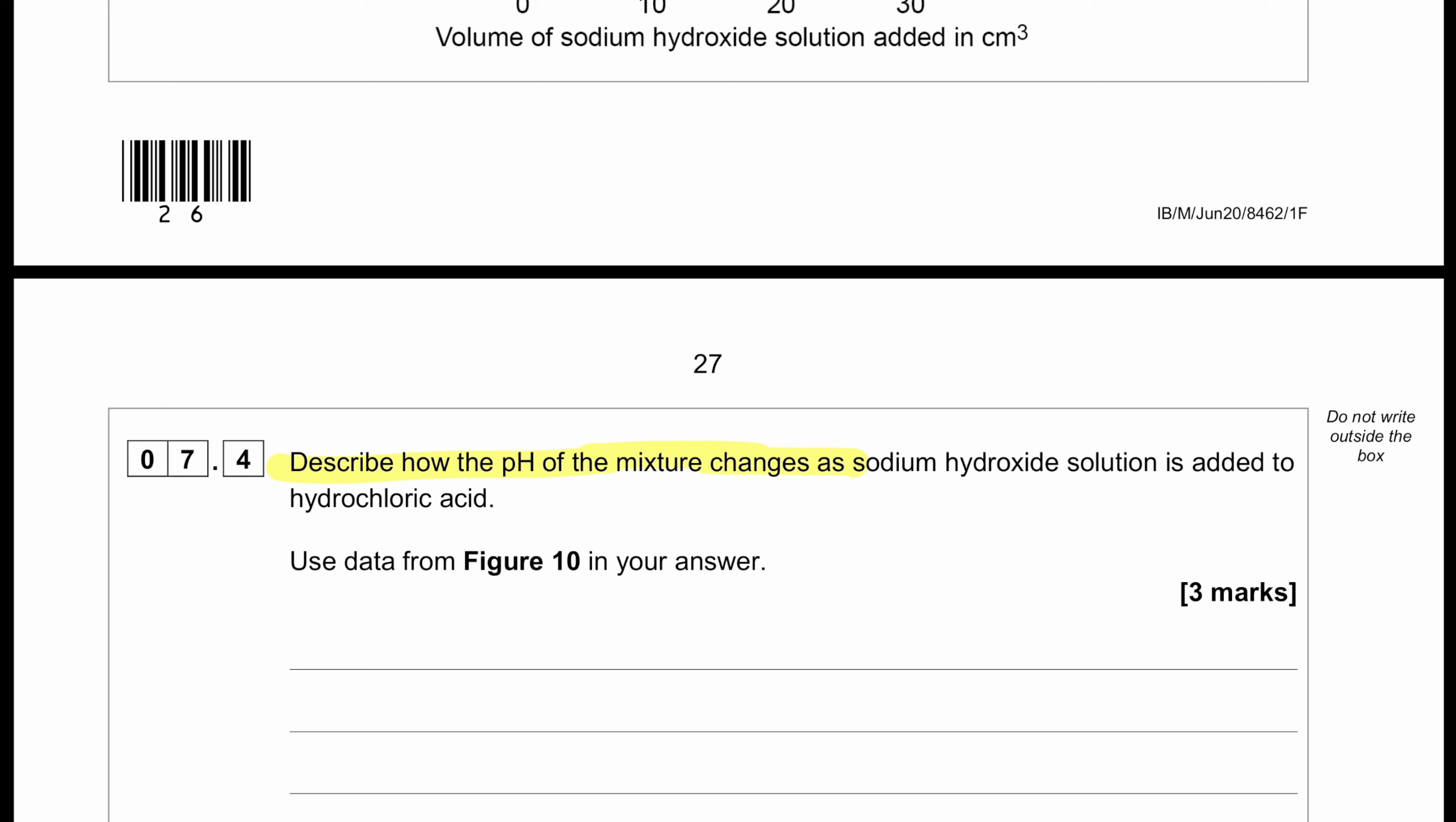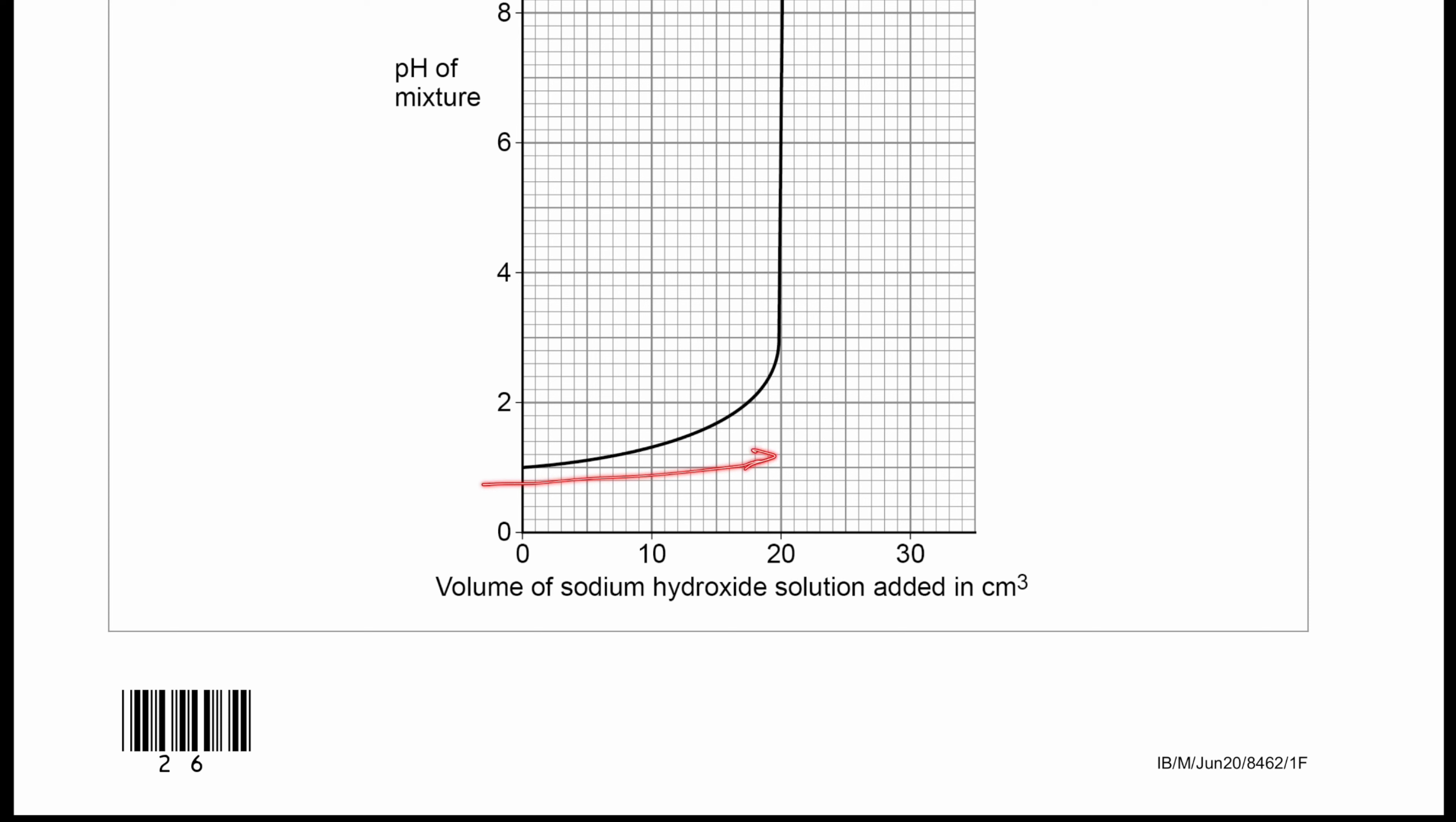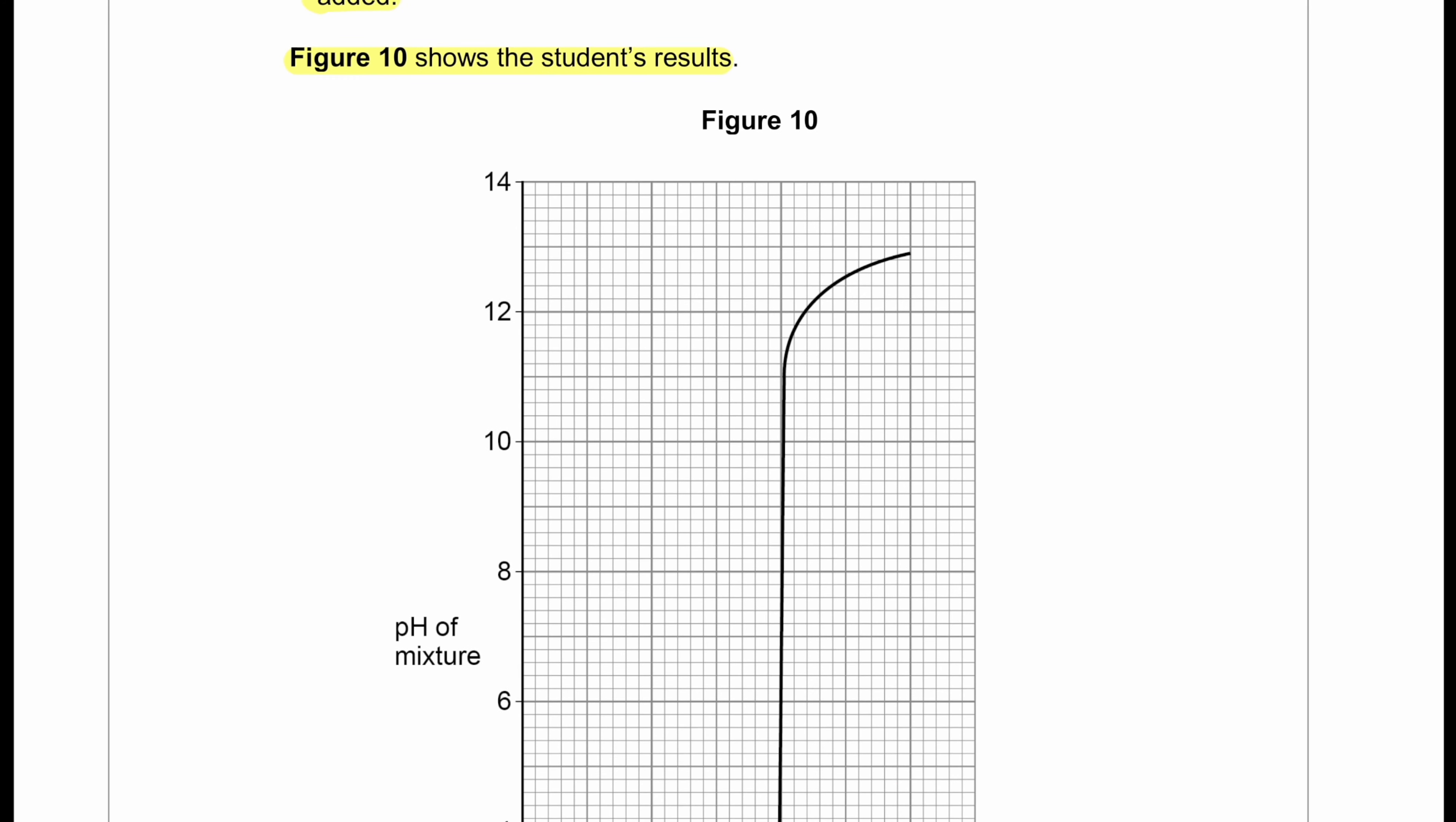Describe how the pH of the mixture changes as sodium hydroxide solution is added to hydrochloric acid. To answer a question like this, we'll have to consider in this way. When we are adding the base, the base is actually removing the hydrogen ion from the solution. So the description will be: from 0 to 20 cm³, we can see there is a gradual increase in pH. However, at 20 cm³, the pH changes from around 3 directly to around 11. It just jumps. But after that, from 20 cm³ to 30 cm³, the pH again increases gradually.